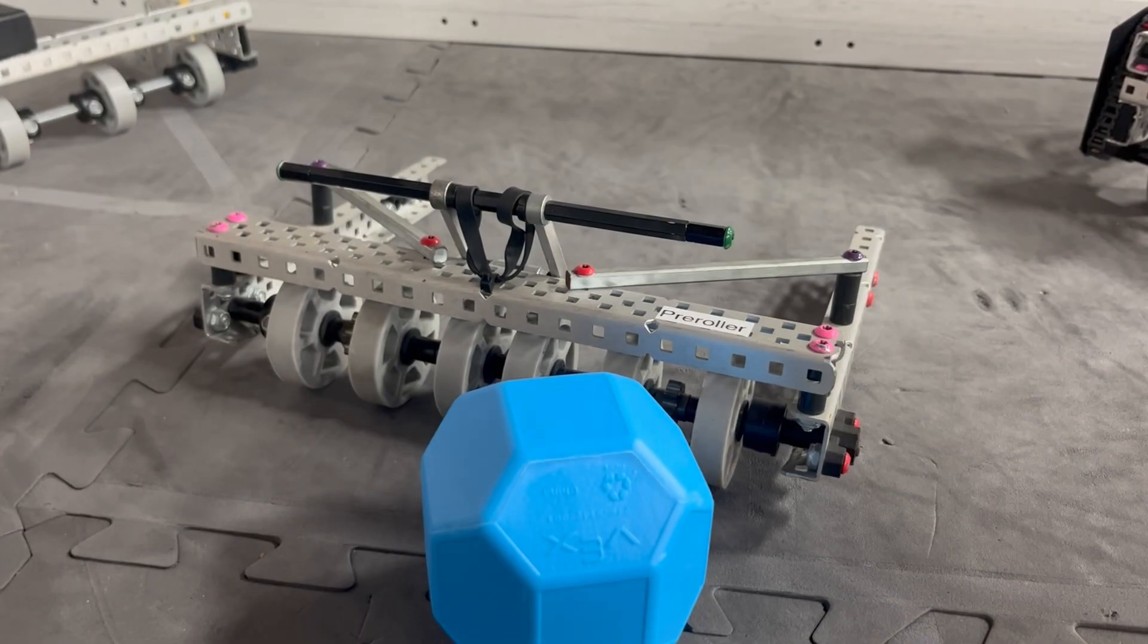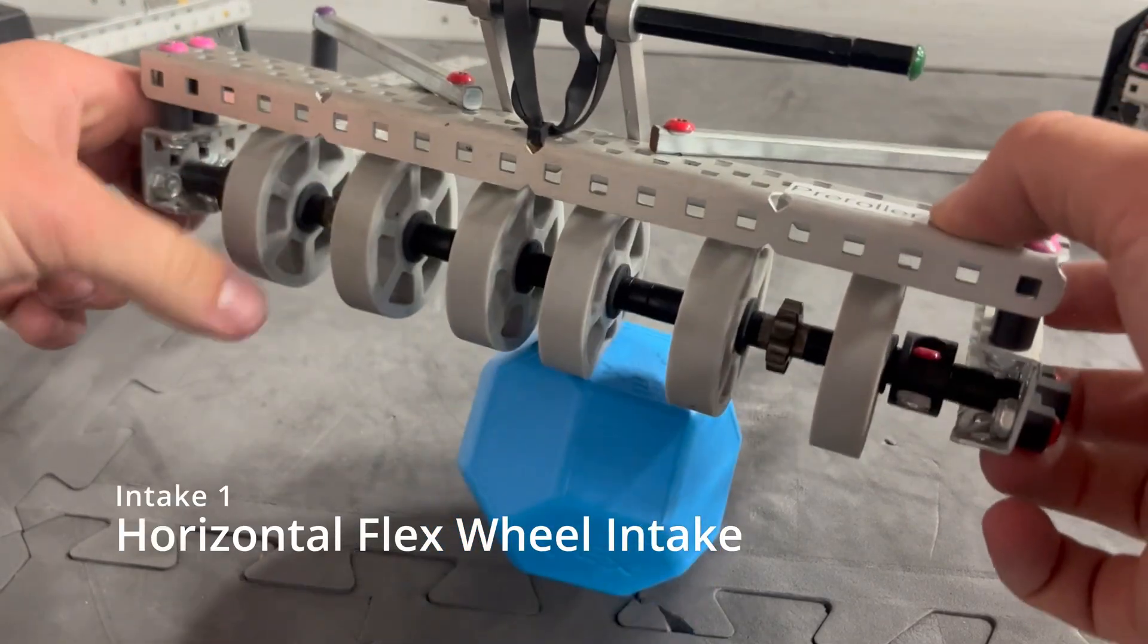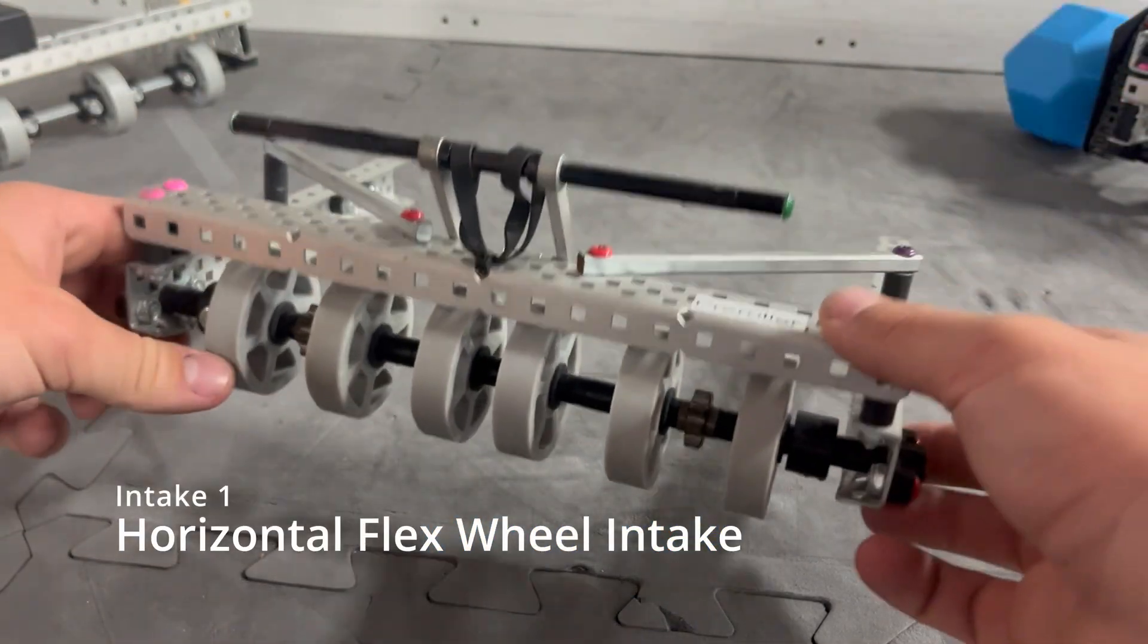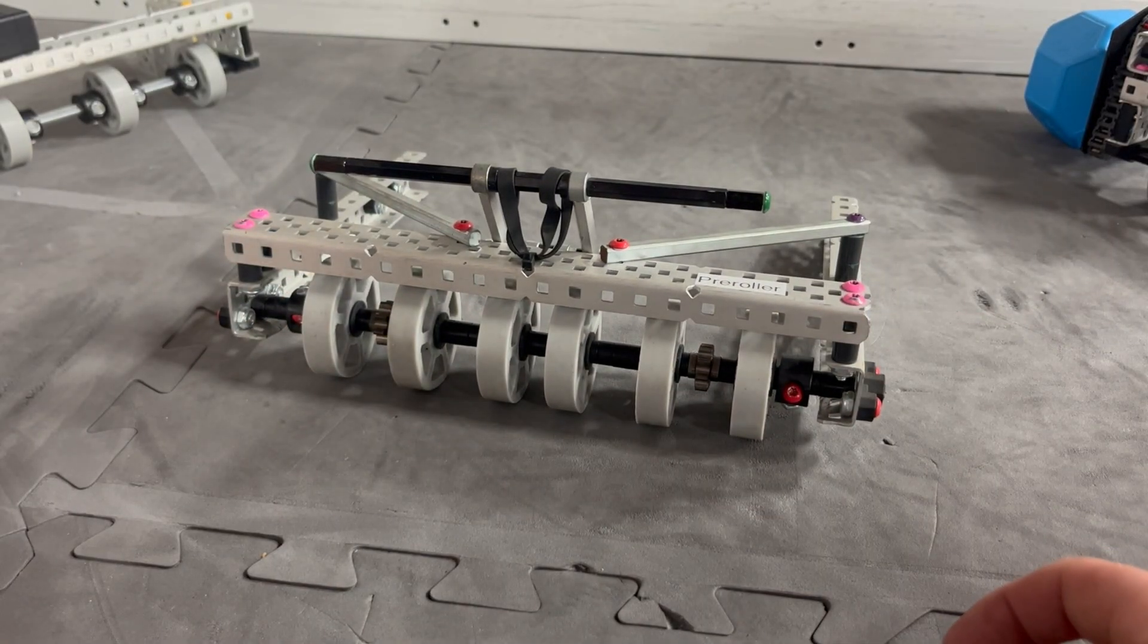Alright, so the first intake we're going to talk about is the flex wheel pre-roller. This is probably what everyone still has from last year, but there's a few different changes that can be made with these that I think you should consider.